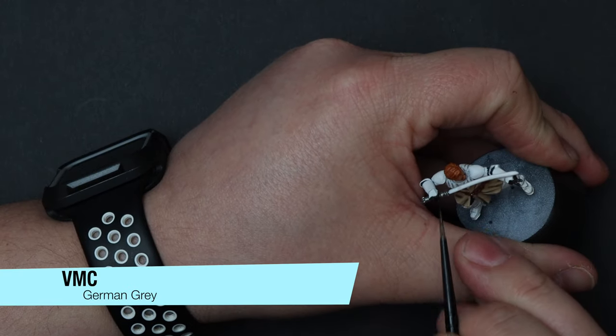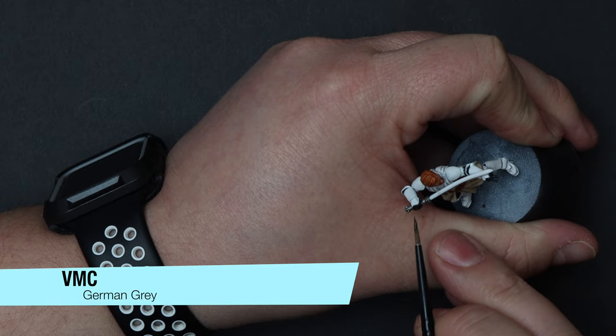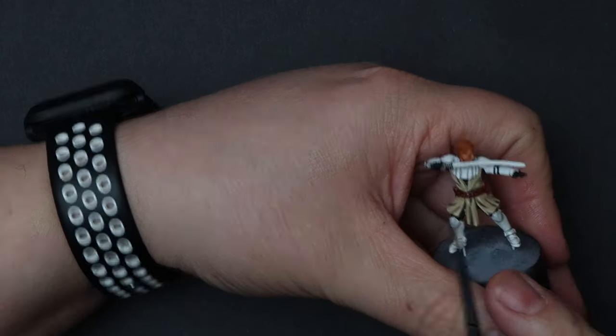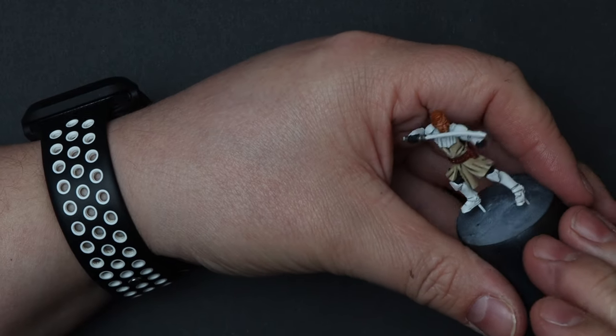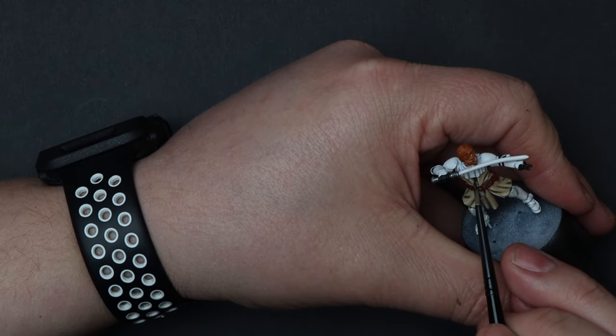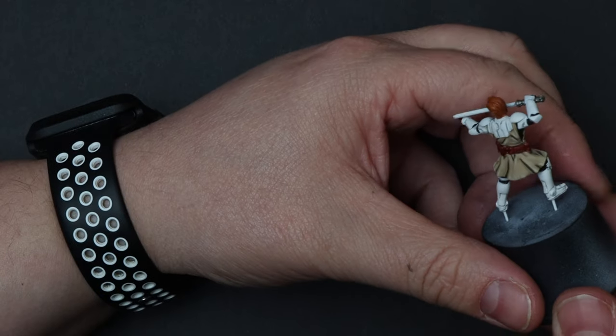Now for the gloves, to give them a highlight, you can grab some German Gray by Vallejo and pick out his fingers. Then if you really felt like it, you could add in a dab of white or a light gray and push those highlights a little bit further.